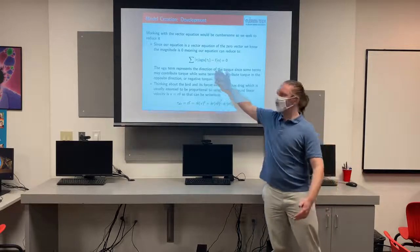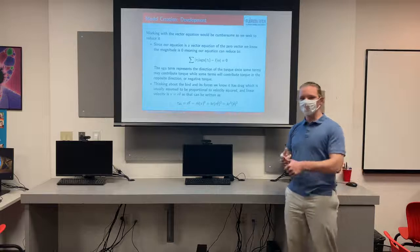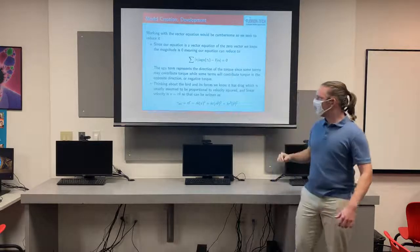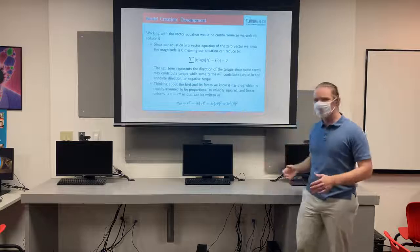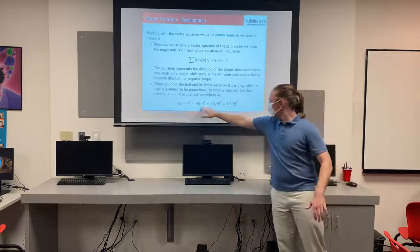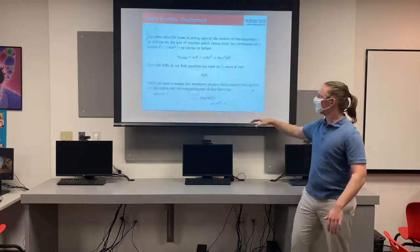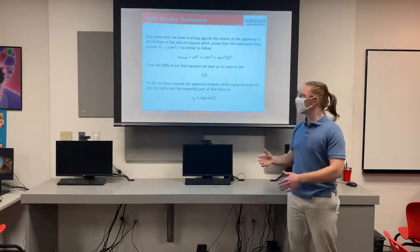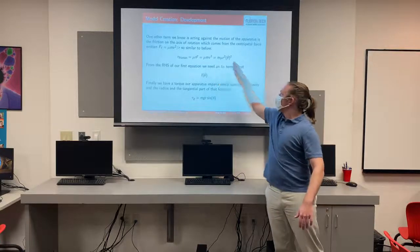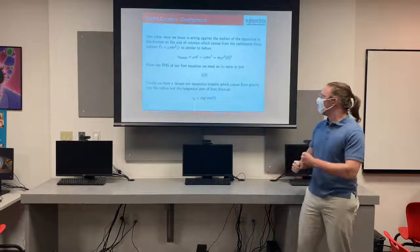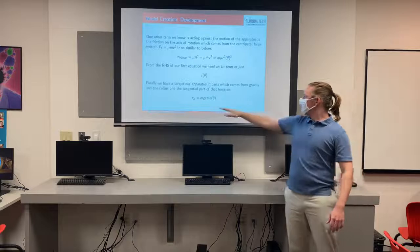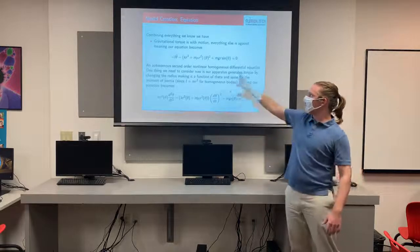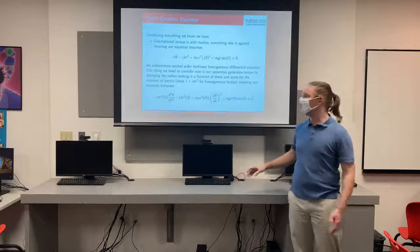We write the sum of torques with magnitudes and sine representing the direction. Gravity will contribute to our motion, but friction and air resistance will oppose it. For air resistance, we assume it is proportional to velocity squared — standard — and we translate from linear velocity to angular velocity. Similarly, friction is also proportional to velocity squared because it comes from the centripetal force, and we again convert from linear to angular velocity. The torque of gravity has a sine theta component. Combining all terms gives us an autonomous second-order nonlinear homogeneous differential equation.